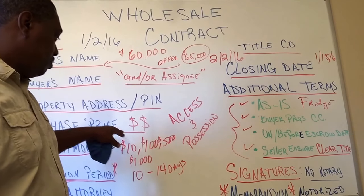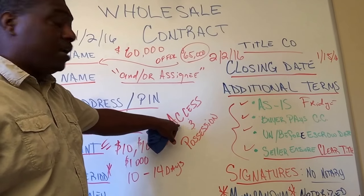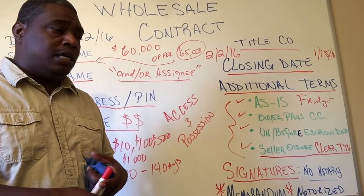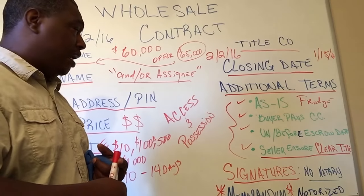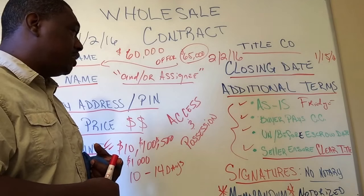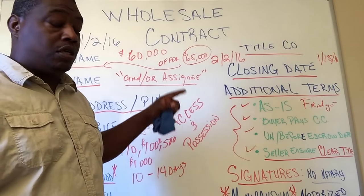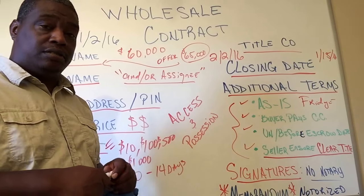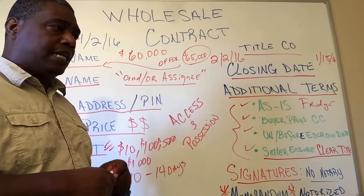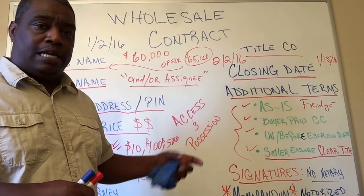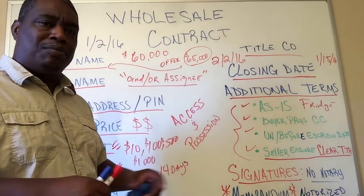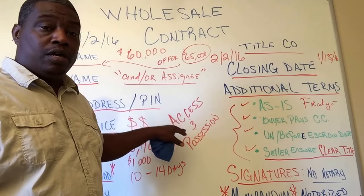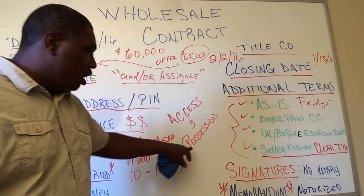We also like to address access and possession, especially during the inspection period. You want to make sure you have access to the property. If it's vacant, ask if you can put a lockbox on it. Some sellers aren't comfortable with a lockbox until closing, so you can say you'll be having plumbers, carpenters, and tradespeople coming through for inspection. Many sellers are forthcoming — they'll meet you there or let a neighbor with a key provide access. Access is essential so your buyers can come through and make offers.